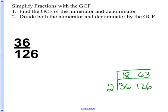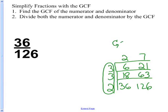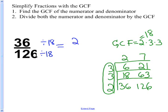3 will go into 18 and 63. 3 goes into 18 6 times, and 3 goes into 63 21 times. And again, I can divide by 3. 3 goes into 6 twice, and 3 goes into 21 7 times. 2 and 7 have no common factors except for 1. So my GCF is 2 times 3 times 3. So my GCF is 18. Now that I found my GCF of 36 and 126, I want to divide both the numerator and the denominator by 18. 36 divided by 18 is 2, and 126 divided by 18 is 7. So 2/7 is equal to 36/126.